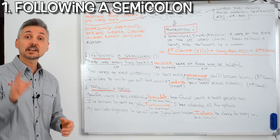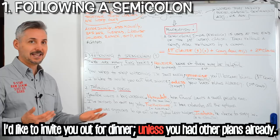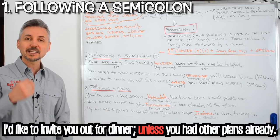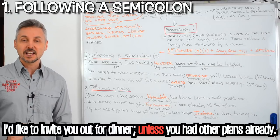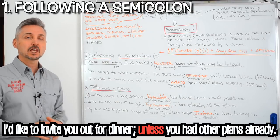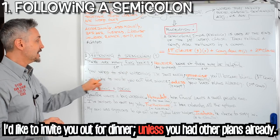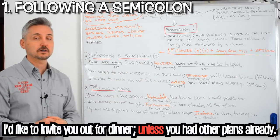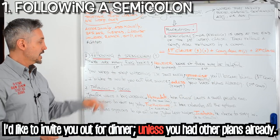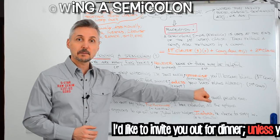So let's look at yet another example: 'I'd like to invite you out for dinner; unless you had other plans already.' 'Unless' means 'except'. This is also an example of the second conditional — 'I'd like to invite you out for dinner' is the condition, and 'unless you had other plans already' is the result. Note 'I would like' and then 'had' in the past simple. If you want to watch a lesson on the second conditional, you may click here.